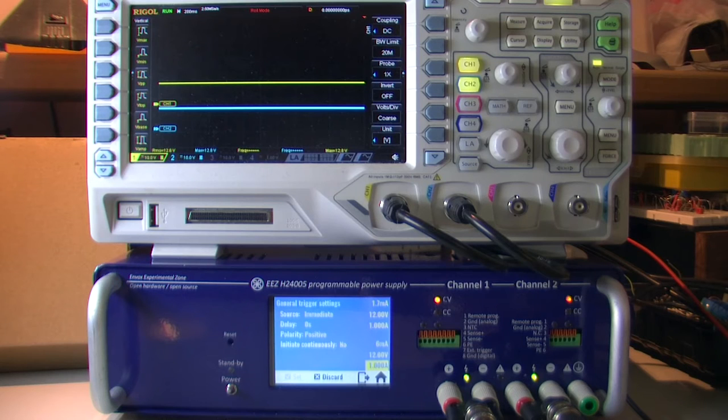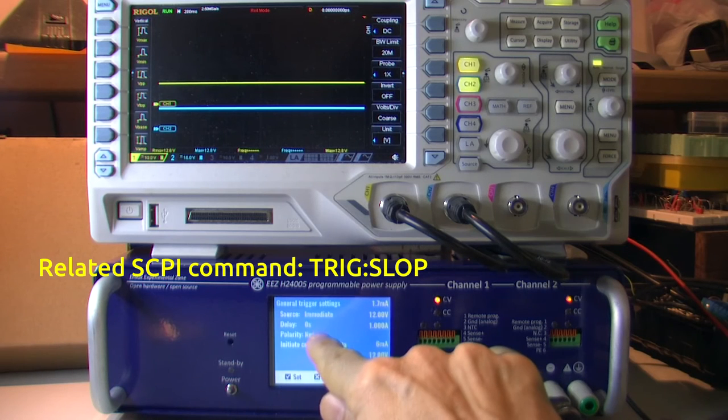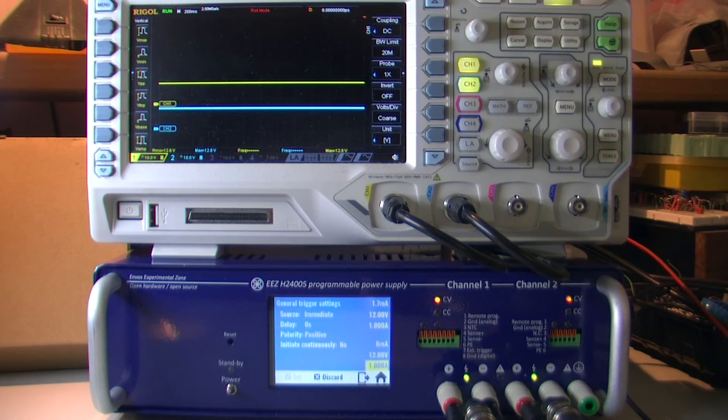When using pin 1 we can define polarity, positive or negative. That means the system will wait for changes from negative to positive, or from 0 to 1, or vice versa from 1 to 0. And the last one is initiated continuously, that means the trigger system can be repeatedly initiated.